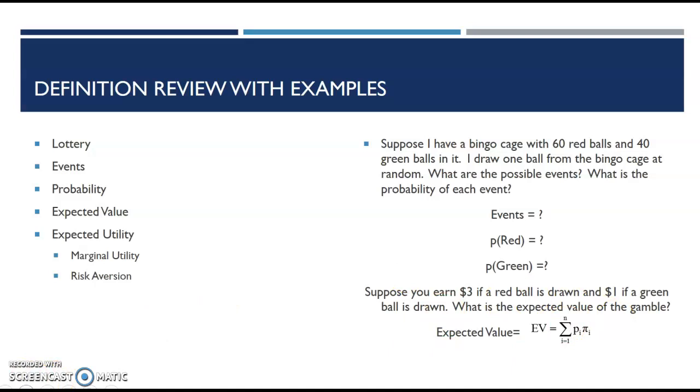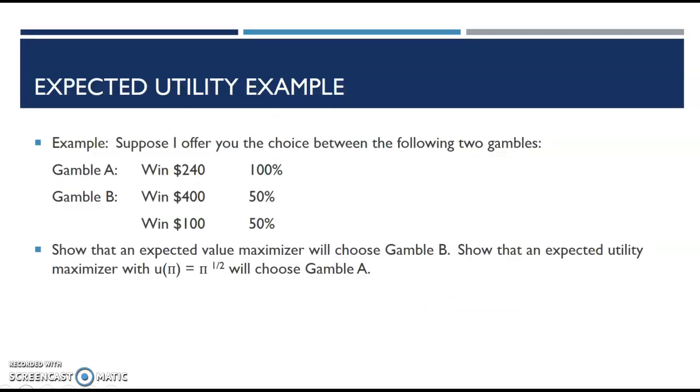My expected utility, in order to know that, I would have to know my utility function. How do I feel about that expected value? Am I risk-averse, am I risk-neutral, or am I risk-seeking? The shape of my utility function will be determined by my degree of risk aversion.